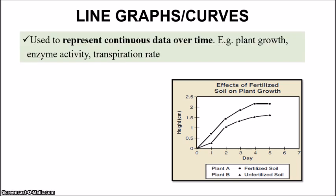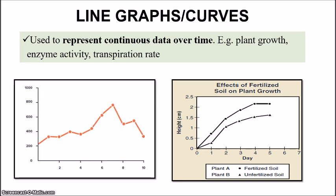Line graphs are used to represent continuous data over time — such as plant growth, enzyme activity, or transpiration rate. Typically with a line graph, you plot the marks and draw a line to connect those dots, like playing dot-to-dot. It's another way of representing continuous data, similar to the histogram. Sometimes they can actually be used interchangeably, depending on the type of topic and data being examined.